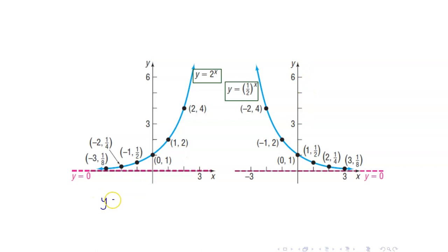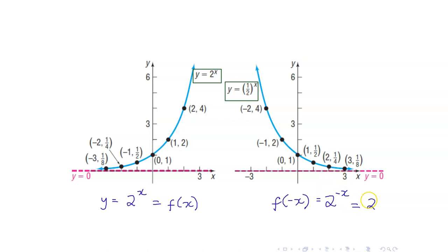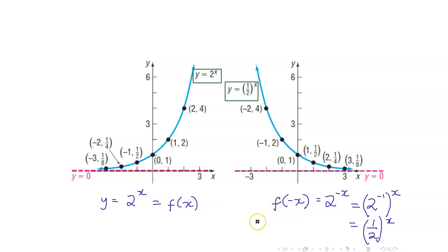Why is that? If y equals 2 to the x is your f of x, notice that f of negative x is equal to 2 to the negative x. And 2 to the negative x can be written as 2 to the negative 1, raised to x. 2 to the negative 1 is 1 half raised to x. Recall that f of negative x is obtained from f of x by reflecting the graph of y equals f of x along the y-axis.